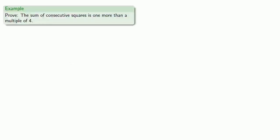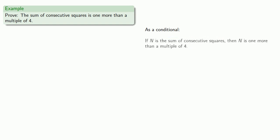For example, say we want to prove the sum of consecutive squares is one more than a multiple of four. Let's rewrite this as a conditional: if n is the sum of consecutive squares, then n is one more than a multiple of four. We can always assume the antecedent, so suppose n is the sum of consecutive squares. We want to prove that n is one more than a multiple of four.